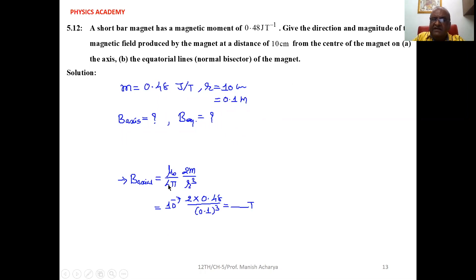Now B_axial, that is μ₀/4π times 2m/R³, the equation we derived in theory. μ₀/4π is 10⁻⁷, 2m is 0.48, and R is 0.1 cubed. If you solve this, you will get the magnetic field at the axial point.